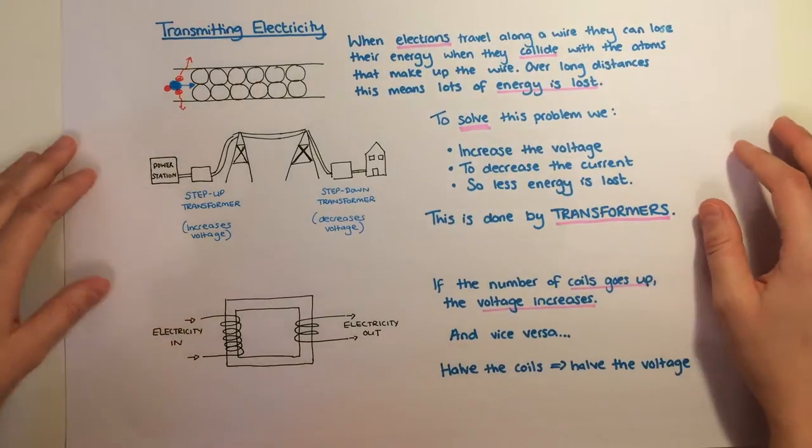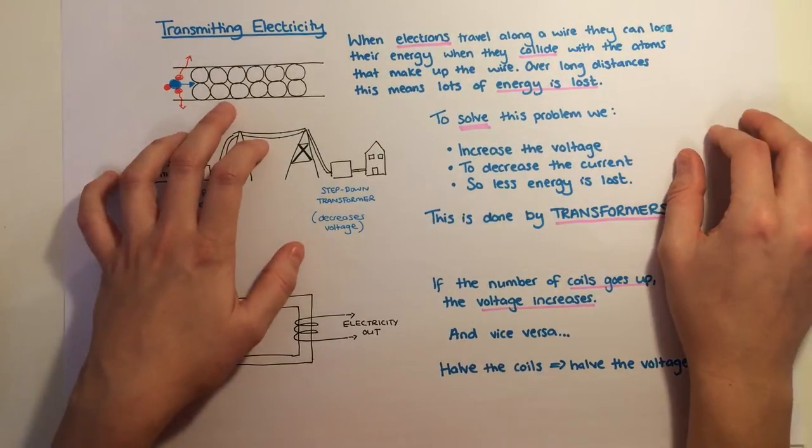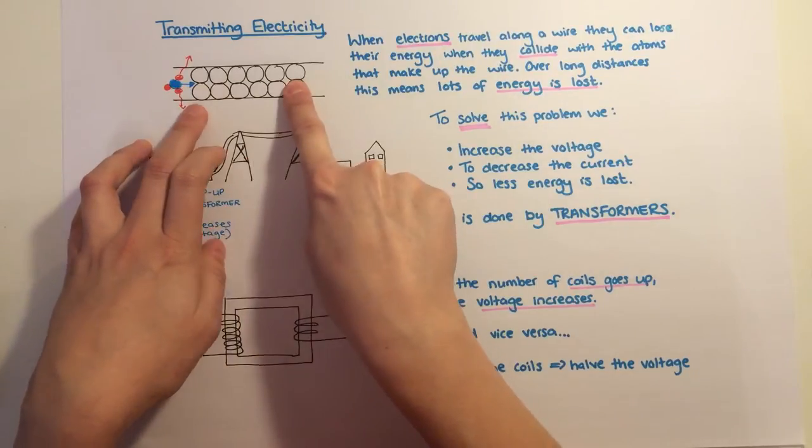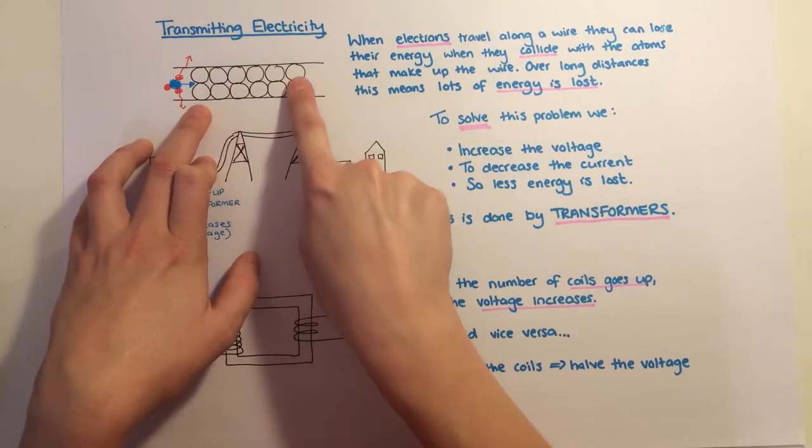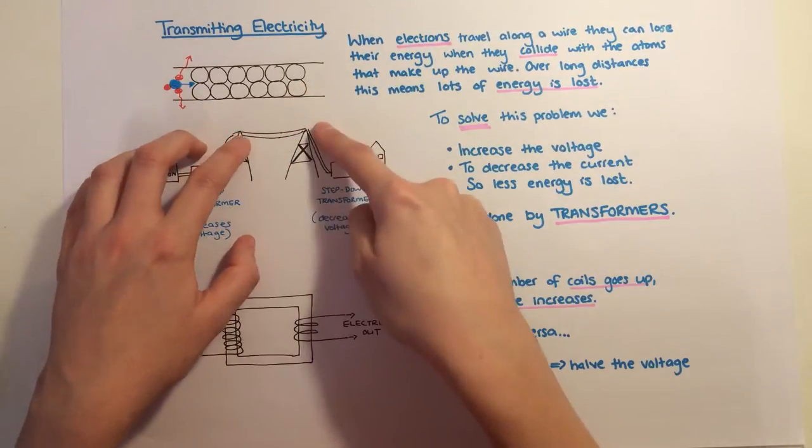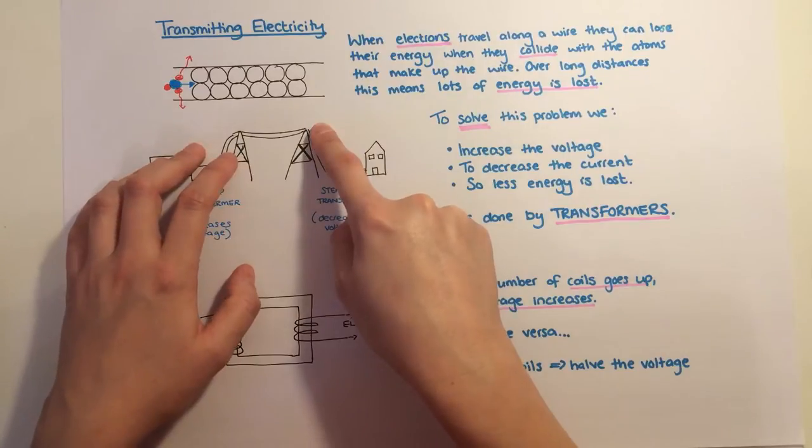Once we've made our electricity at the power station, we need to get it to our home. The only problem is when electrons, the blue part here, try to travel along a wire, they bump into the atoms that the wire is made of, and that causes them to lose some of their energy, which is a problem if you're trying to send electricity a really long way.